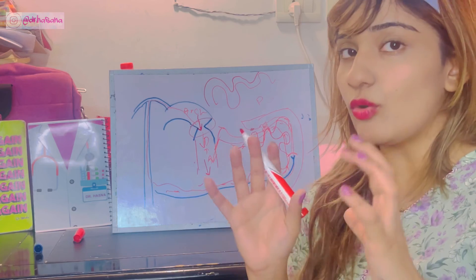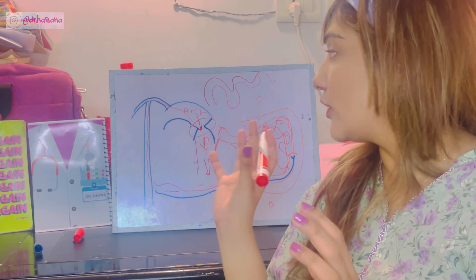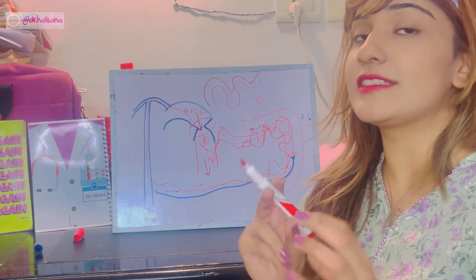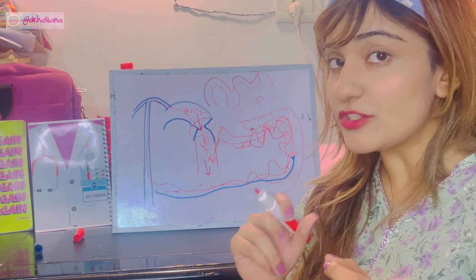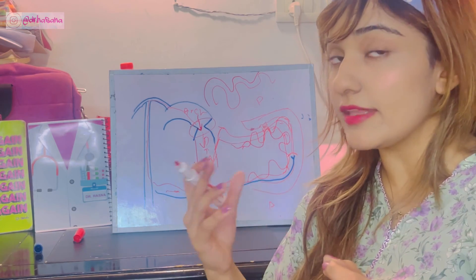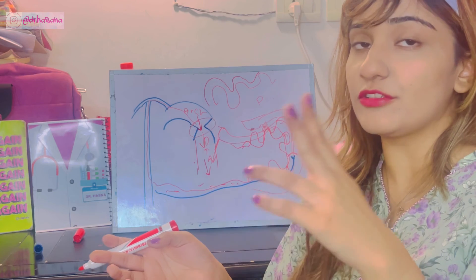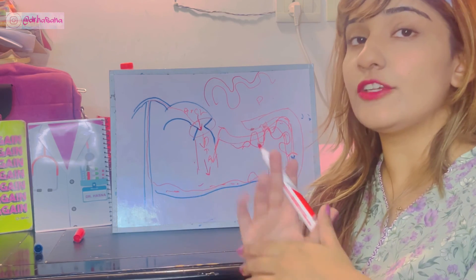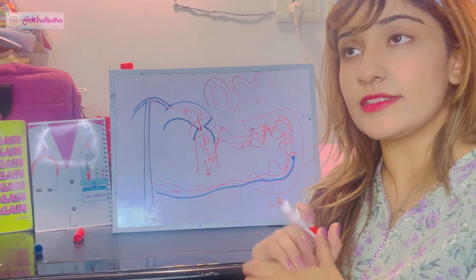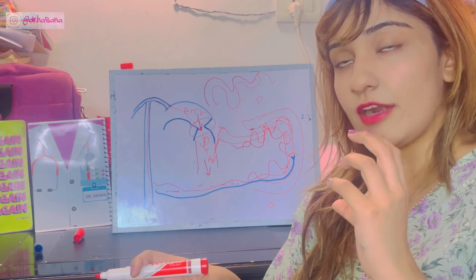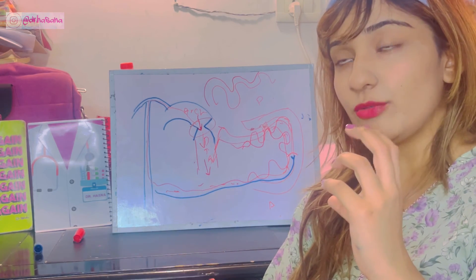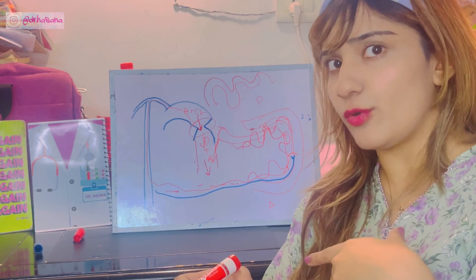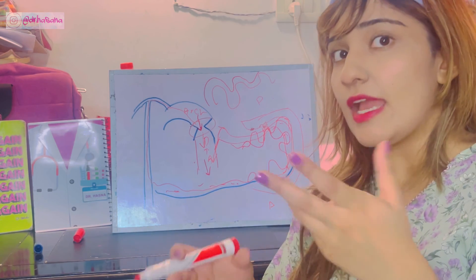Overall, coarctation of the aorta is the narrowing of the aorta, which results in collateral circulation occurring through the intercostal arteries. Since the intercostal arteries carry more blood at higher pressure,